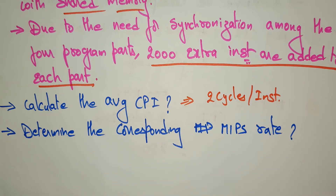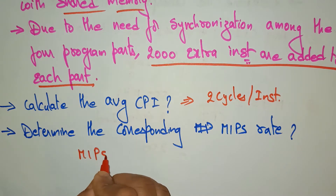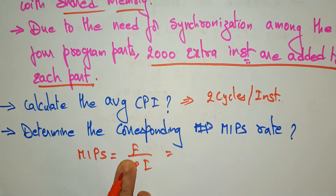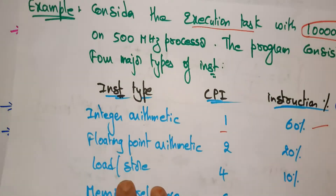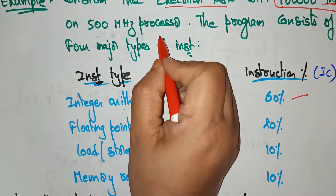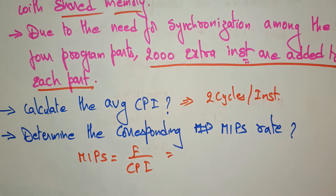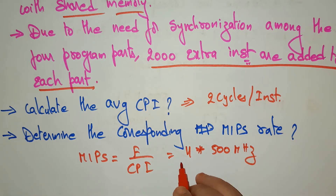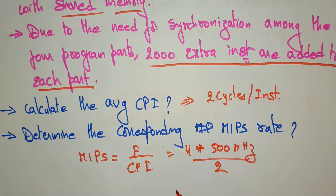Next, let's determine the corresponding MIPS rate — millions of instructions per second. For a uniprocessor, MIPS equals frequency F divided by CPI. The clock rate is 500 MHz for a single processor. Since I am using a 4-processor system, it becomes 4 × 500 MHz divided by CPI of 2, which gives MIPS = 1000.